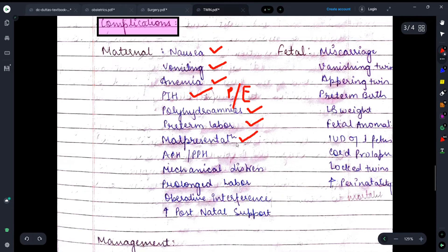Sometimes antepartum hemorrhage or postpartum hemorrhage can also be seen. The mother can go into mechanical distress. The labor procedure becomes prolonged. Sometimes in twin pregnancy it happens that one baby is delivered but the other baby cannot be delivered. So sometimes we see such problems. In that case the fetus mortality increases. Operative interference has to be done more and post-natal support increases.